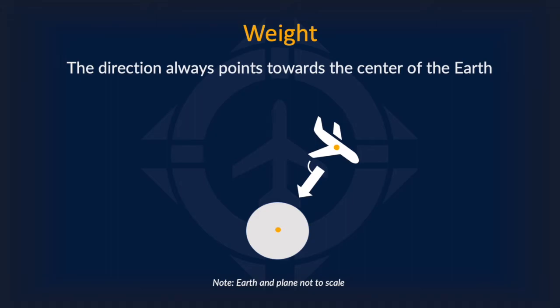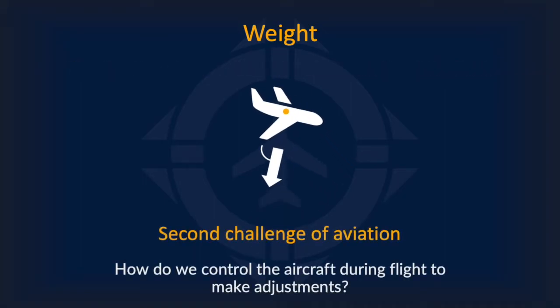The direction of the weight vector is always pointing towards the center of the Earth, and during flight the airplane always rotates about this point. Here lies the second challenge of aviation: how do we control the aircraft during flight to make adjustments for changes in the airplane's weight and center of mass? To discuss the solutions to these two challenges, we must first introduce the other forces of flight.